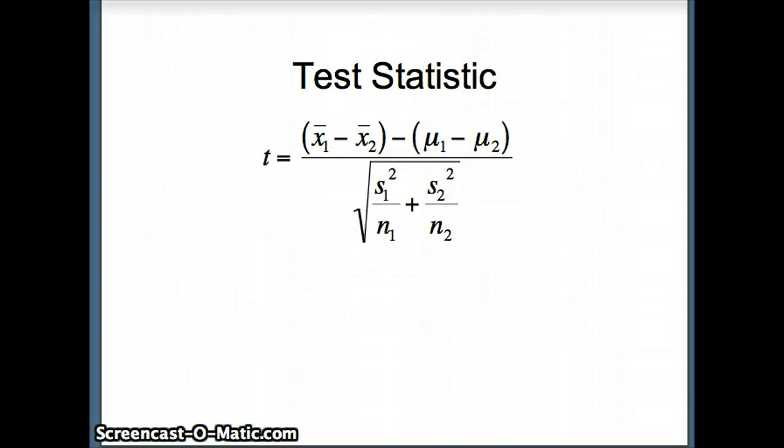So here's a test statistic we're going to use. Again, this is equivalent to the test statistic for models with unequal variances. x̄₁ minus x̄₂ minus (μ₁ - μ₂) over the square root of s₁² over n₁ plus s₂² over n₂.